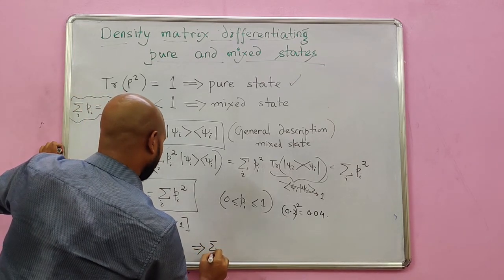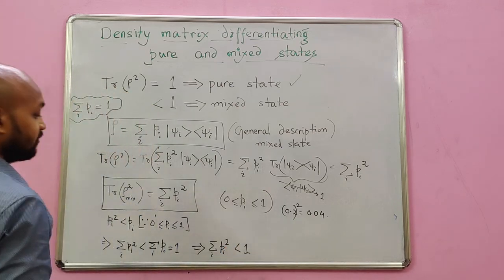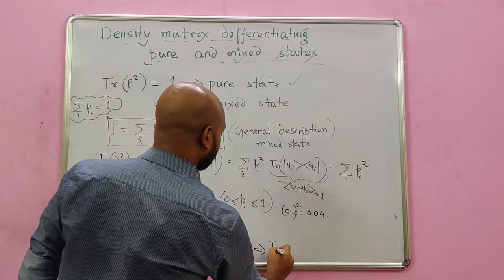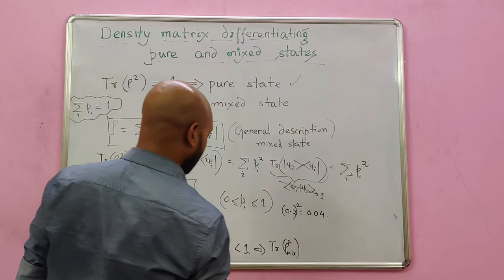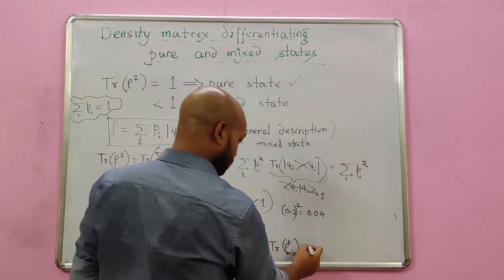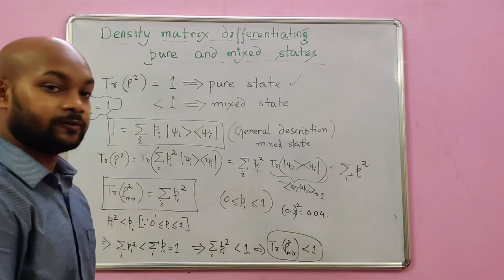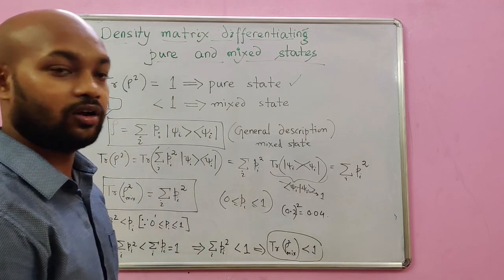And this is the reason the summation of pi squared becomes less than 1, and hence you say this is not for the trace of rho squared. Trace of rho mixed squared becomes less than 1. And this is why we say for mixed state, we have the trace of rho squared less than 1. All right, let's go.